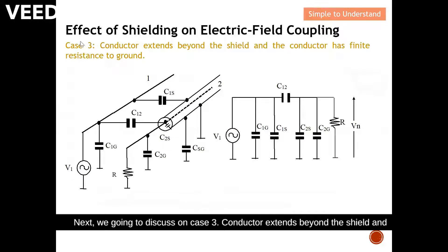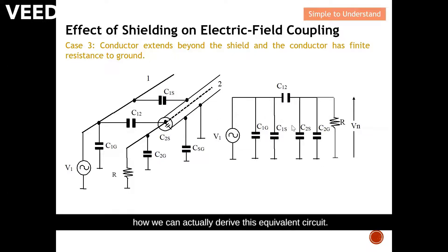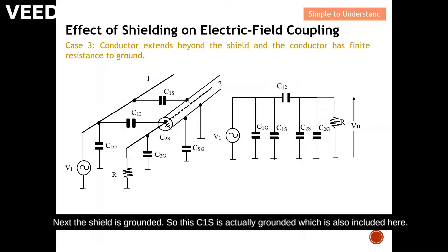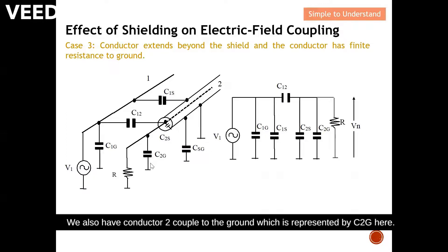Next we'll discuss Case 3: the conductor extends beyond the shield and the conductor has a finite resistance to ground. The exposed conductor extends beyond the shield significantly. In the equivalent circuit: V1 is here with C1G; the shield is grounded so C1S is grounded and included here; the coupling from conductor one to two is represented by C12; conductor two's coupling to ground is represented by C2S; conductor two's coupling to ground is also represented by C2G; and there is a resistance also included in the equivalent circuit.